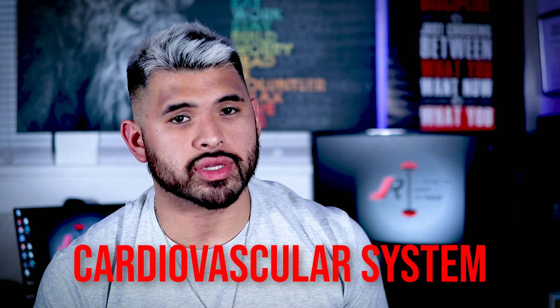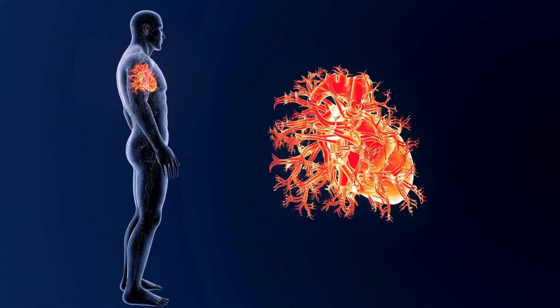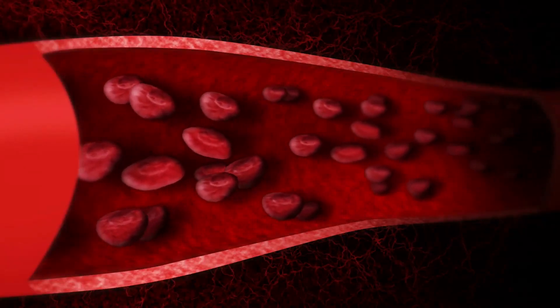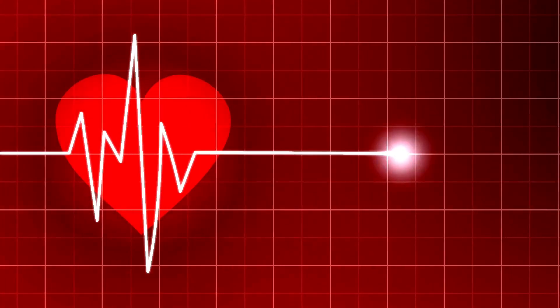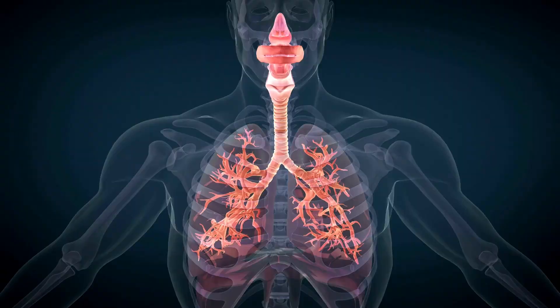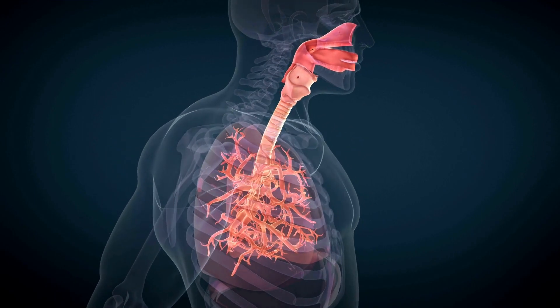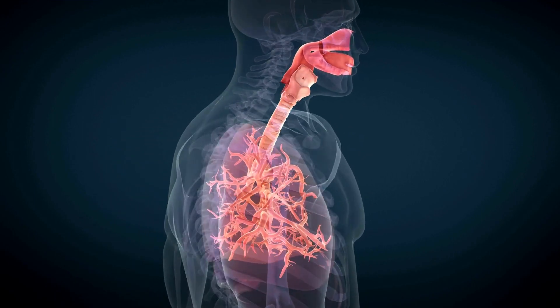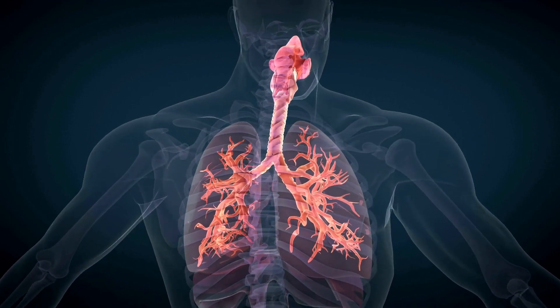The cardiovascular system includes the heart, blood vessels, and blood, responsible for transporting oxygen, nutrients, and waste products throughout the entire body. Knowledge of this system is crucial for monitoring heart rate, blood pressure, and cardiovascular endurance. Going in line with that is the respiratory system, which enables the exchange of oxygen and carbon dioxide in the body. By understanding how breathing and lung function are affected by exercise, we can help clients improve their endurance and control.